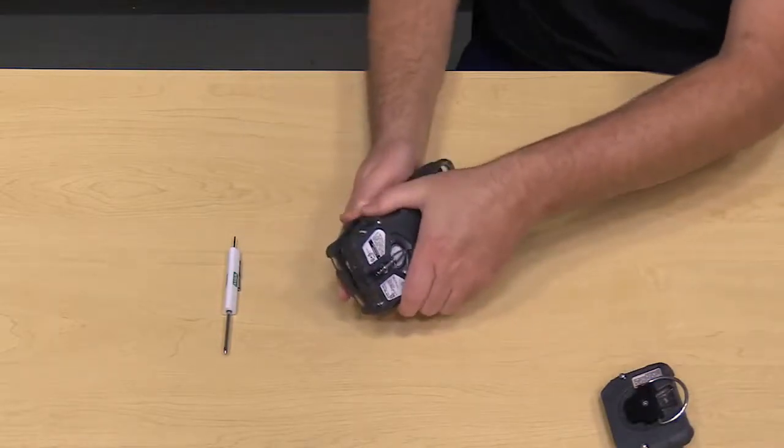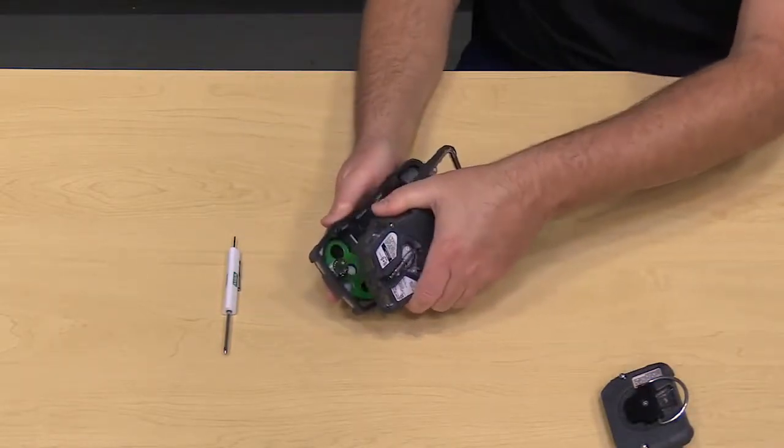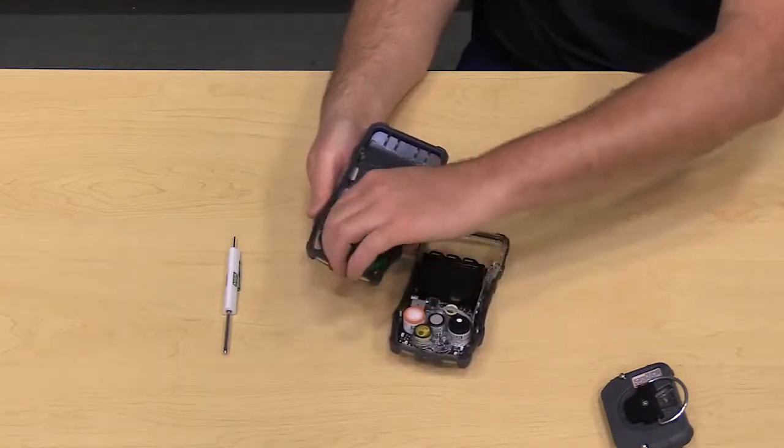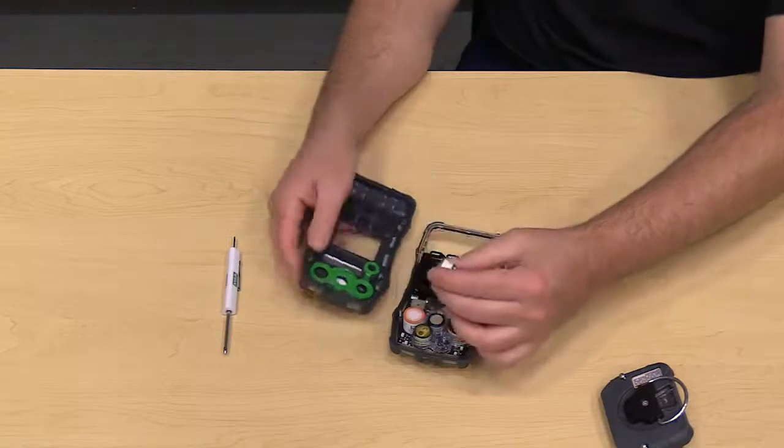Then we separate the two halves of the Altair 5X gas detector. Sensors may stick to the front gasket. We can simply take them and put them back into place.